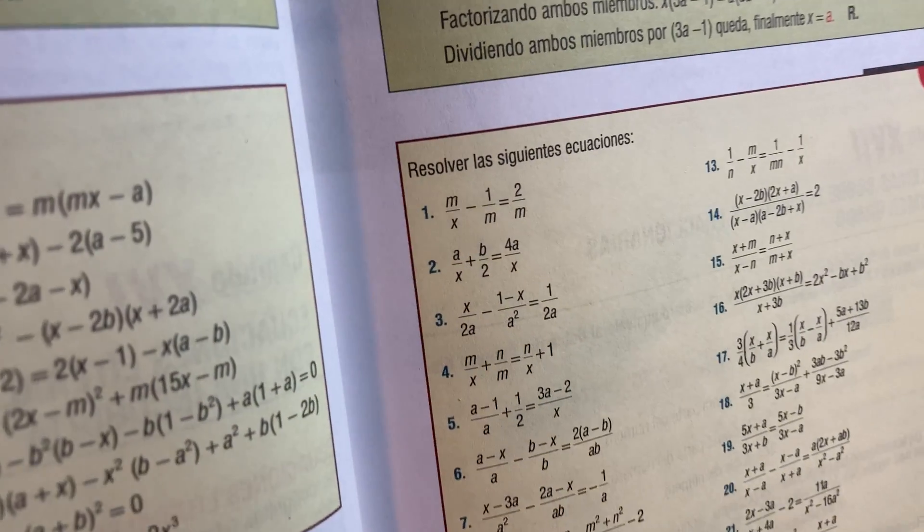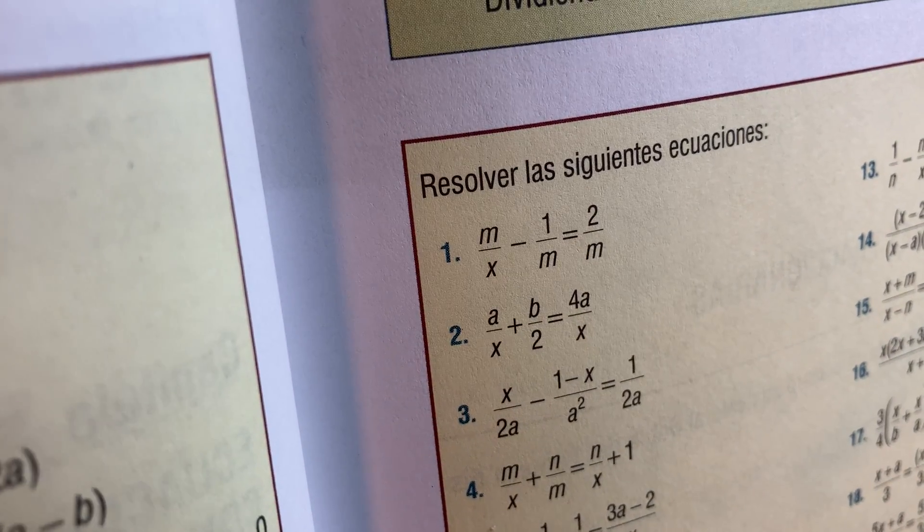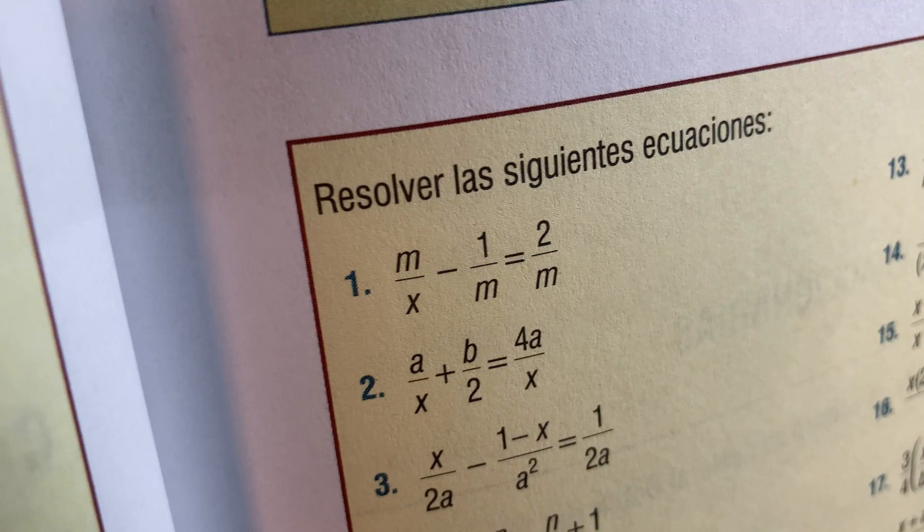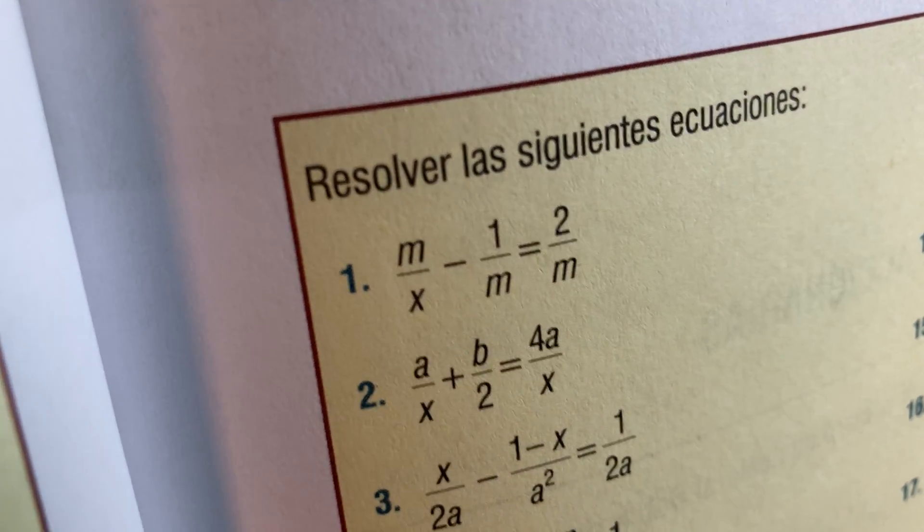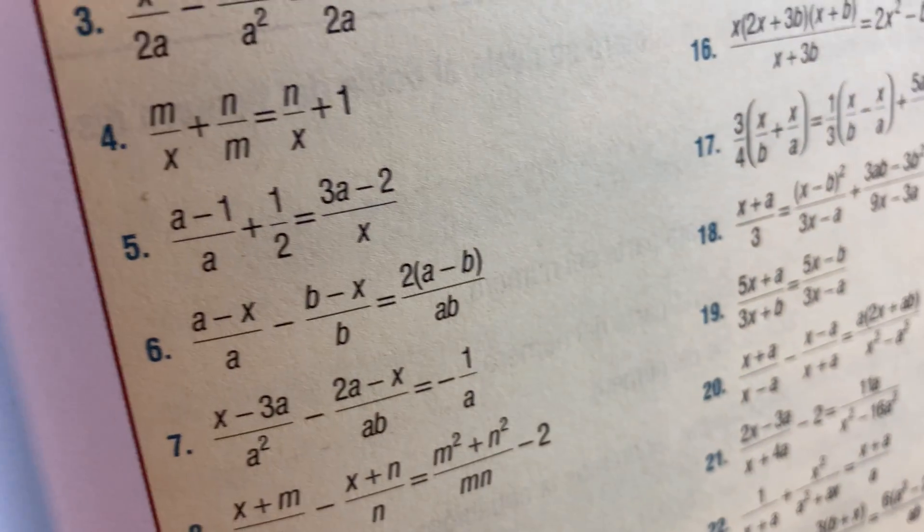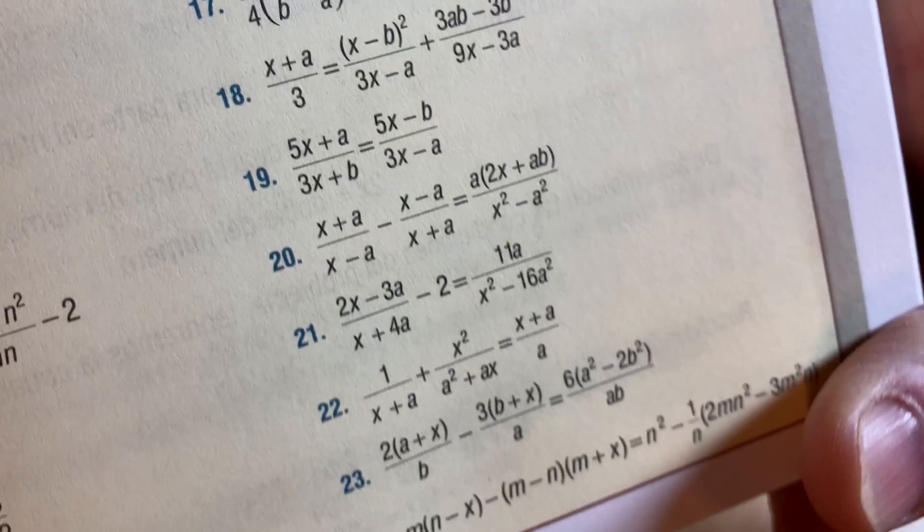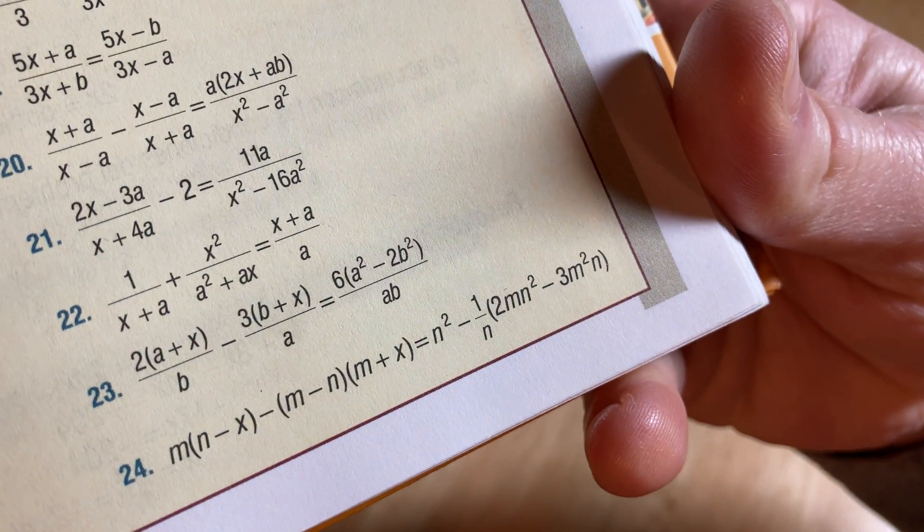You have to solve the following equations. The very first one has fractions in it right away. There's no rest. M over X minus one over M equals two over M. And then check this out. Wow. Look at that.